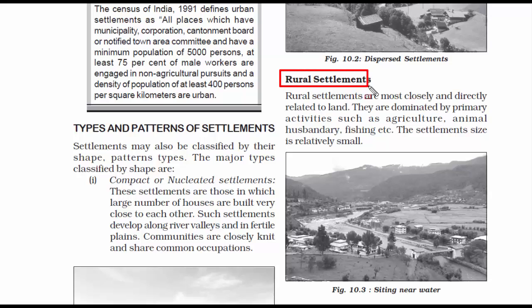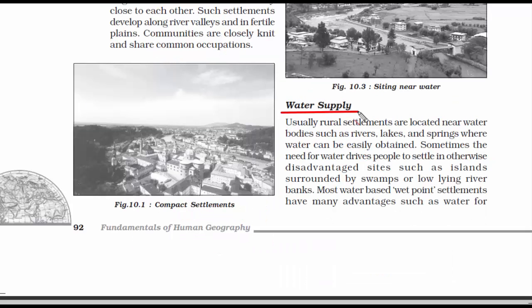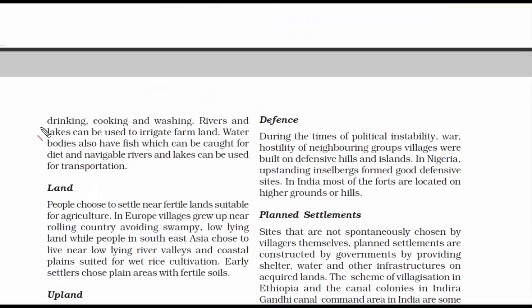Now we go to the topic of rural settlements. Rural settlements primarily involve activities like agriculture, animal husbandry, and fishing. Houses in rural areas are usually small and compact. The first factor affecting the location of rural settlements is water supply. Due to agricultural and fishing needs, rural people like to reside near a water body like a river, lake, or spring. Agriculture requires a lot of water, and rivers and lakes can also be used for transportation.